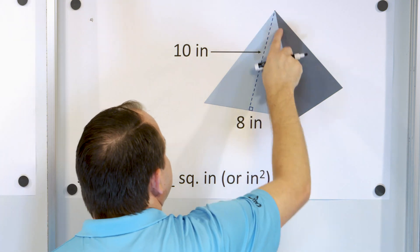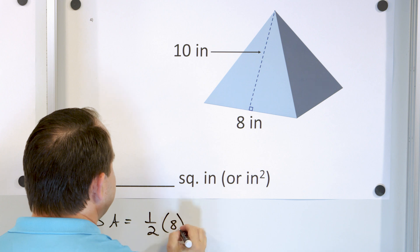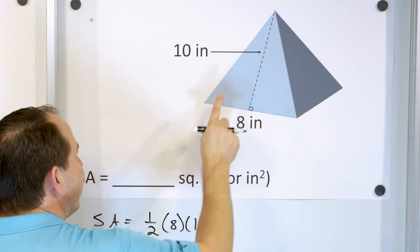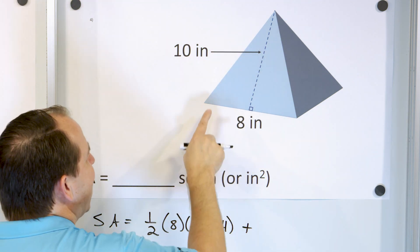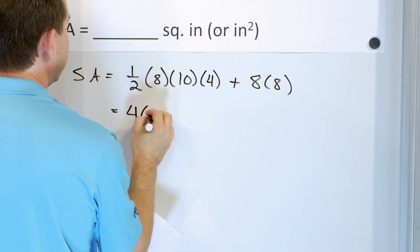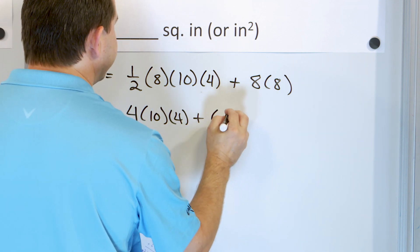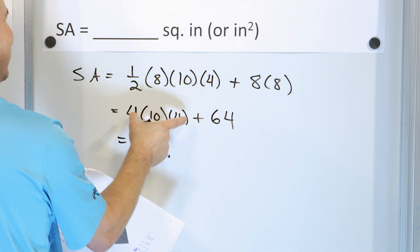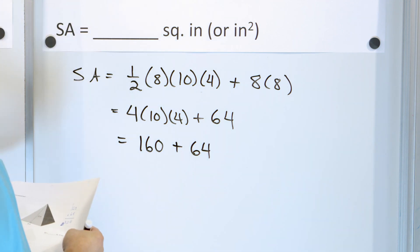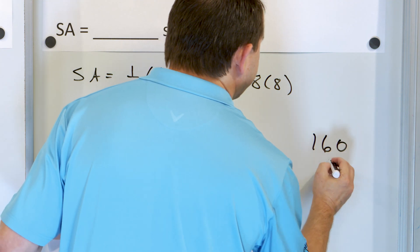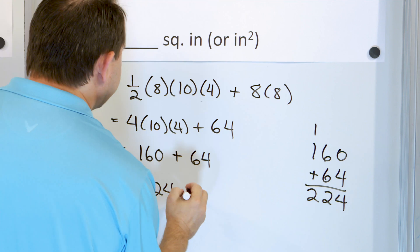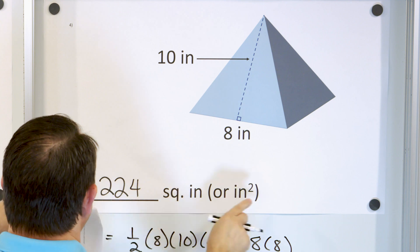We have a pyramid with a base of eight along each side and a slant height of ten inches. The area of this triangle is one-half base times height: one-half times eight times ten, times four for all four triangles, plus eight times eight for the base. One-half of eight is four; four times four is sixteen; sixteen times ten is 160. Eight times eight is 64. So 160 plus 64 equals 224 square inches.